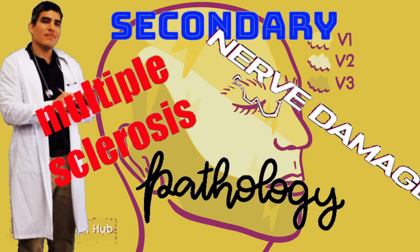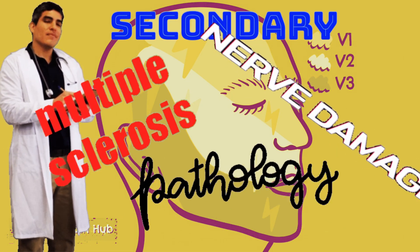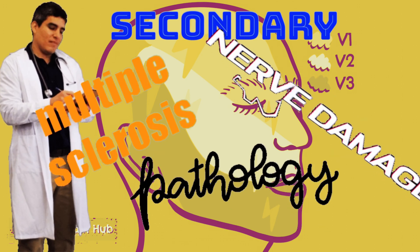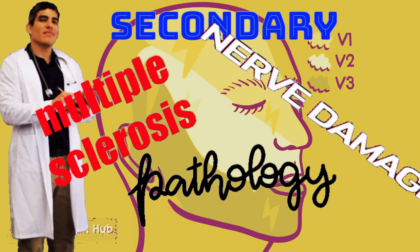Secondary trigeminal neuralgia is caused by other pathological characteristics, such as tumors, multiple sclerosis or physical damage to the nerve.